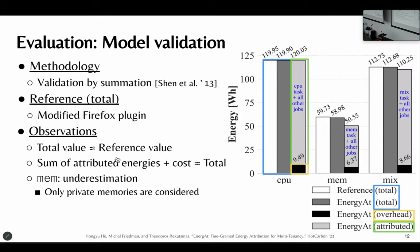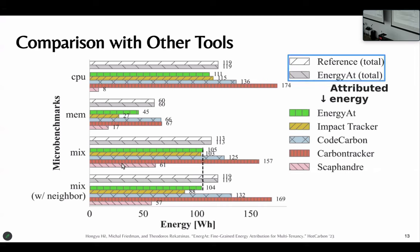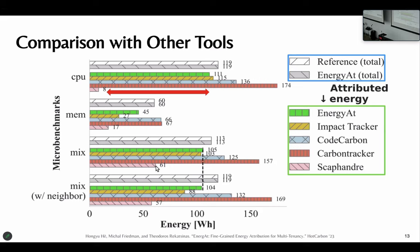Next, we compare our prototype with other tools. This is a violin plot, so let me break it down. The category on the left are the microbenchmarks serving as target applications. These are the total energy consumption of the machine, and below are the energy values attributed to different benchmarks by various tools. Several observations: first, we can see drastically different results from various tools. Also, we can see considerable underestimation as well as overestimation. Another observation is that EnerJet is not affected by the addition of noisy neighbors.